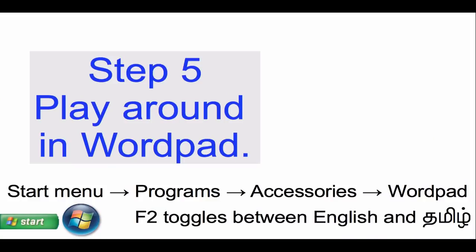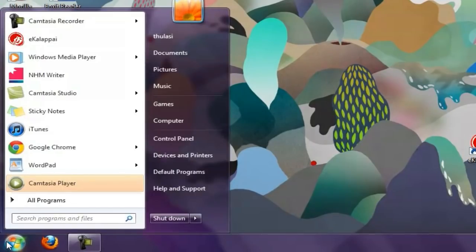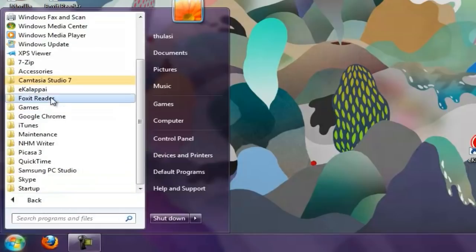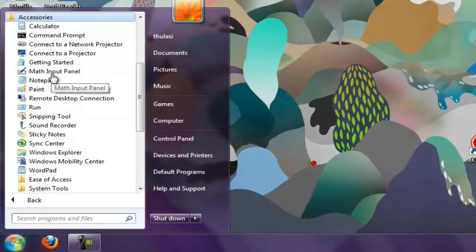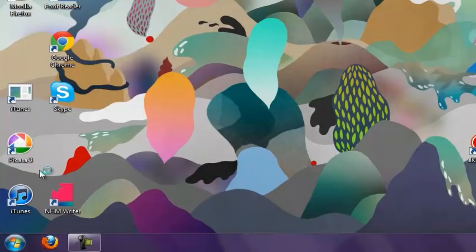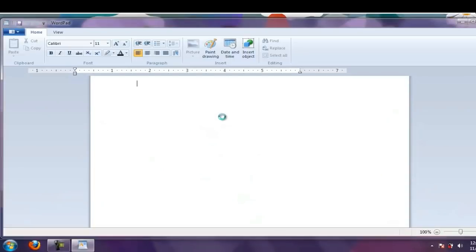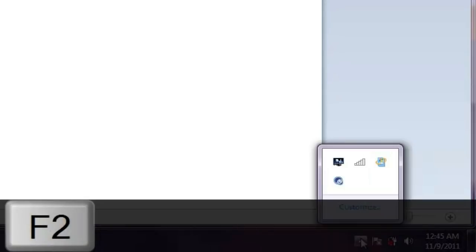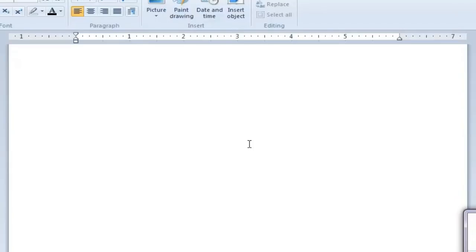Next, step five: you should play around with this. I recommend that you do this in WordPad. You can get to WordPad by clicking on the Start menu button, usually in the bottom left-hand corner of your Windows screen. Then go to Programs, then Accessories, and WordPad will be at the bottom of that list. Once you've opened WordPad and have your program running, you can press F2 to toggle into Tamil or back into English.